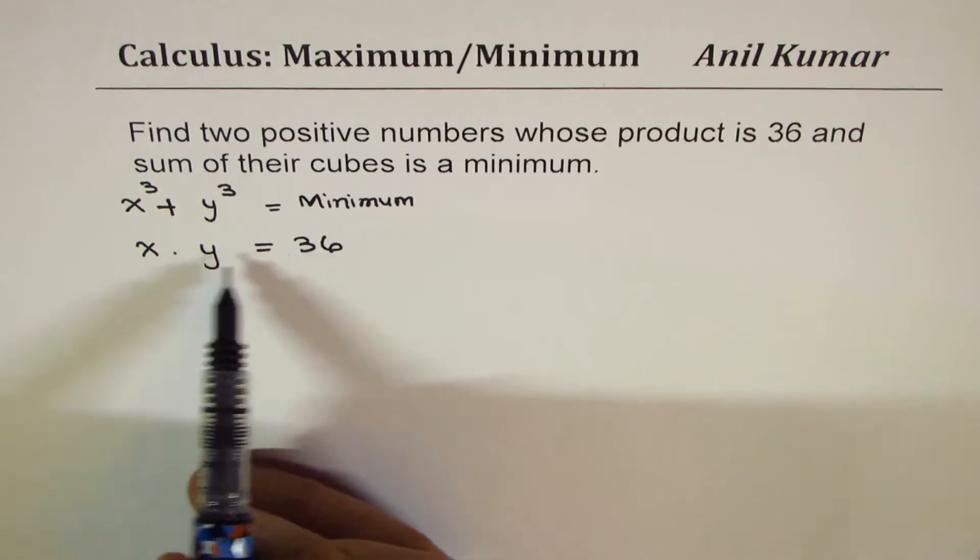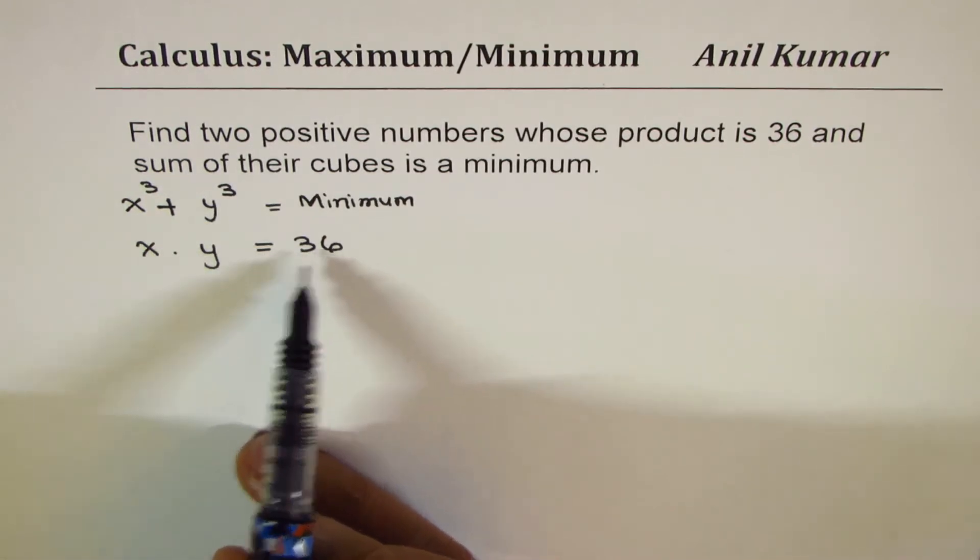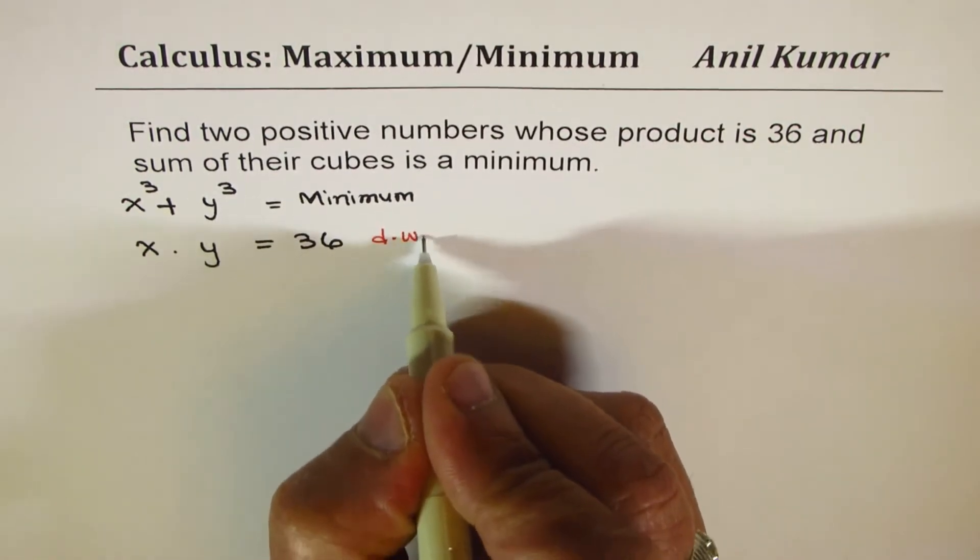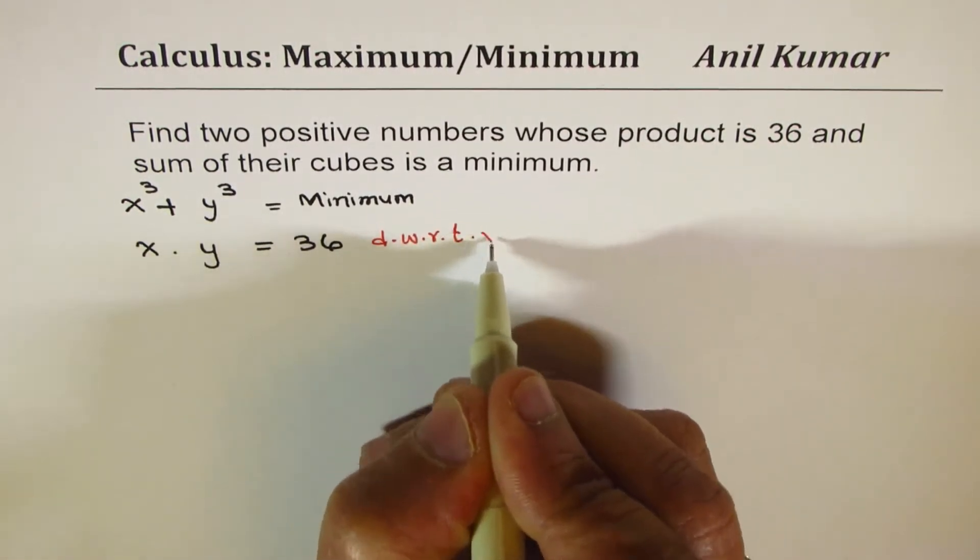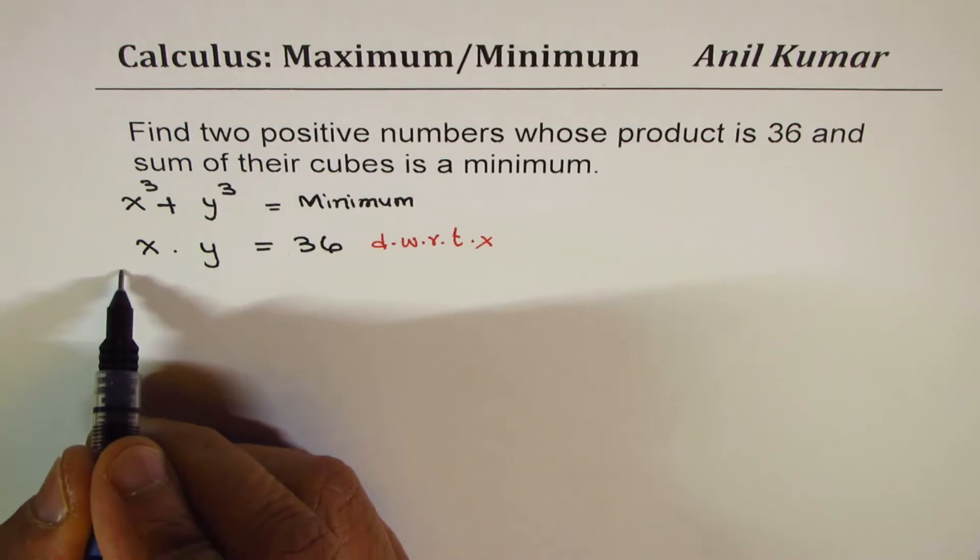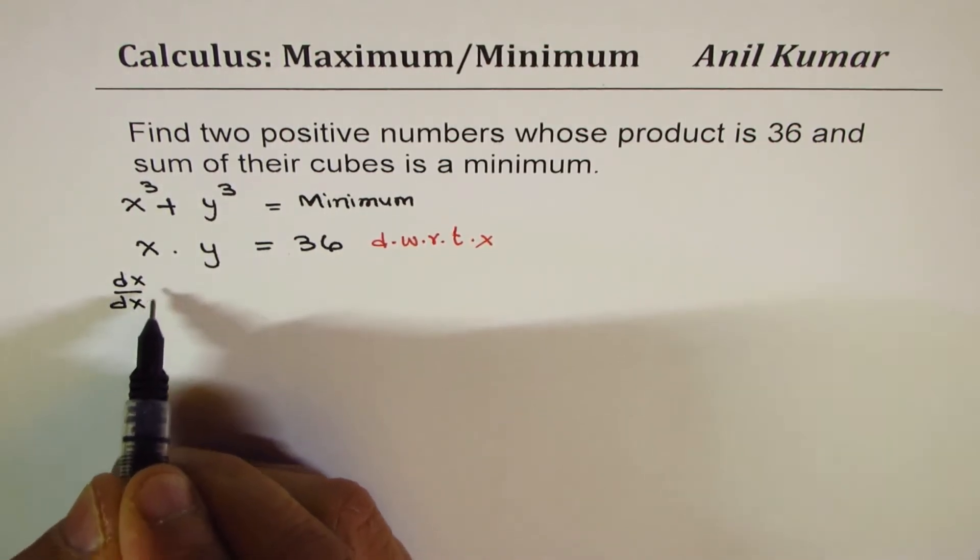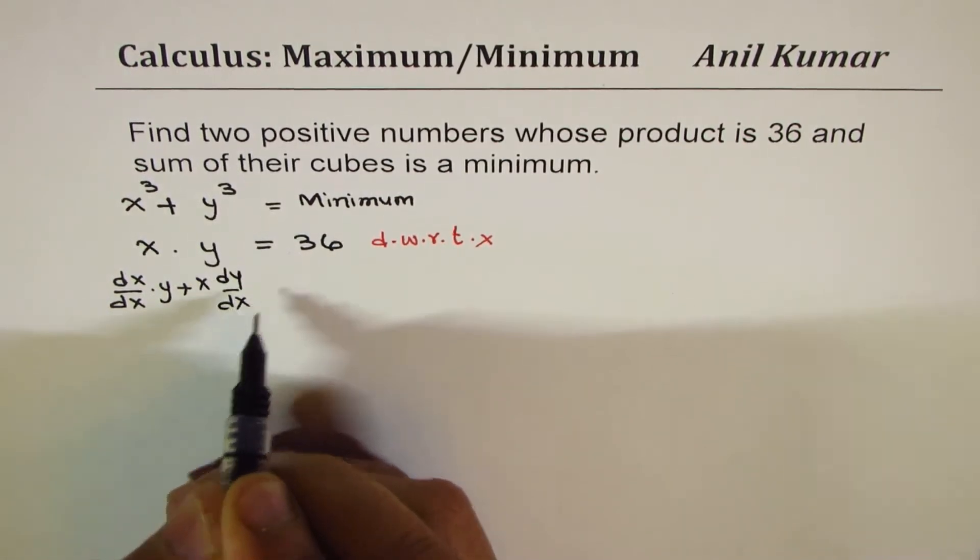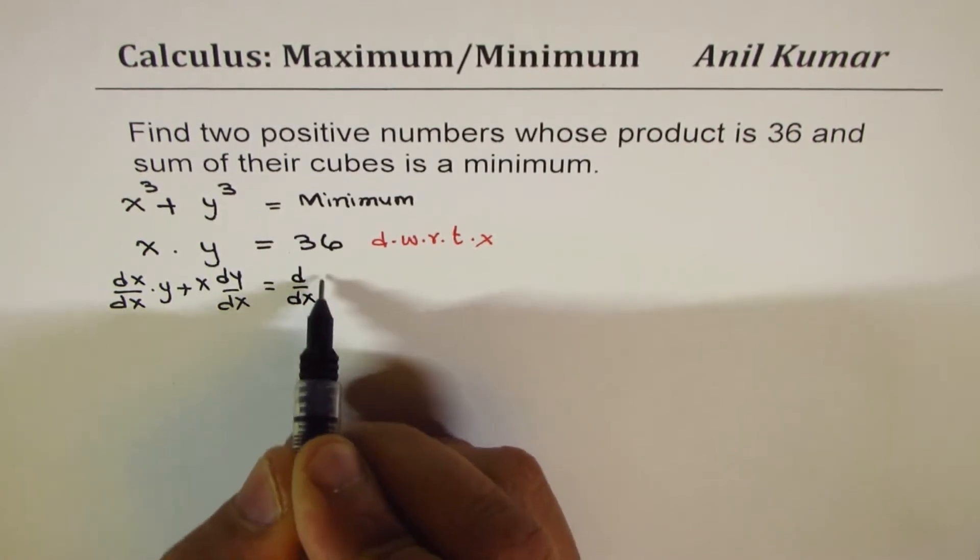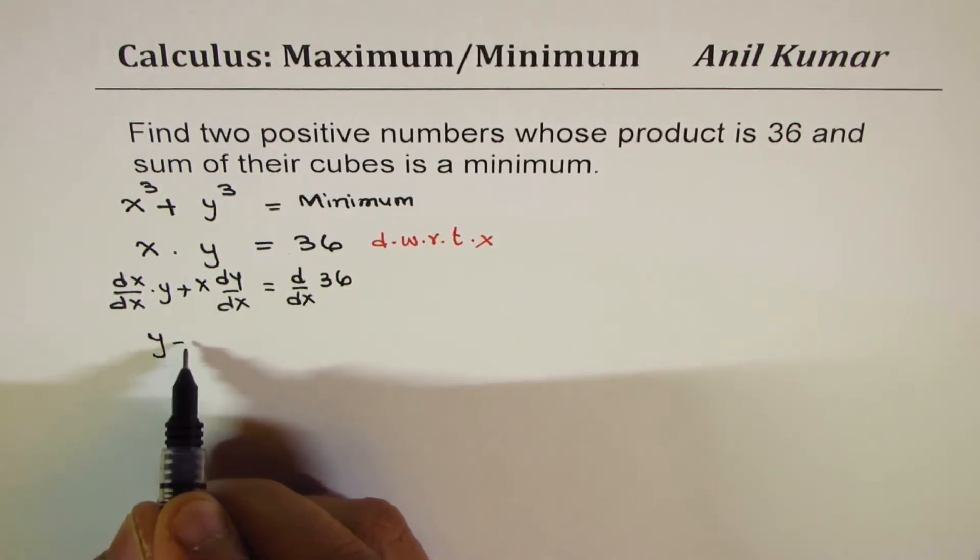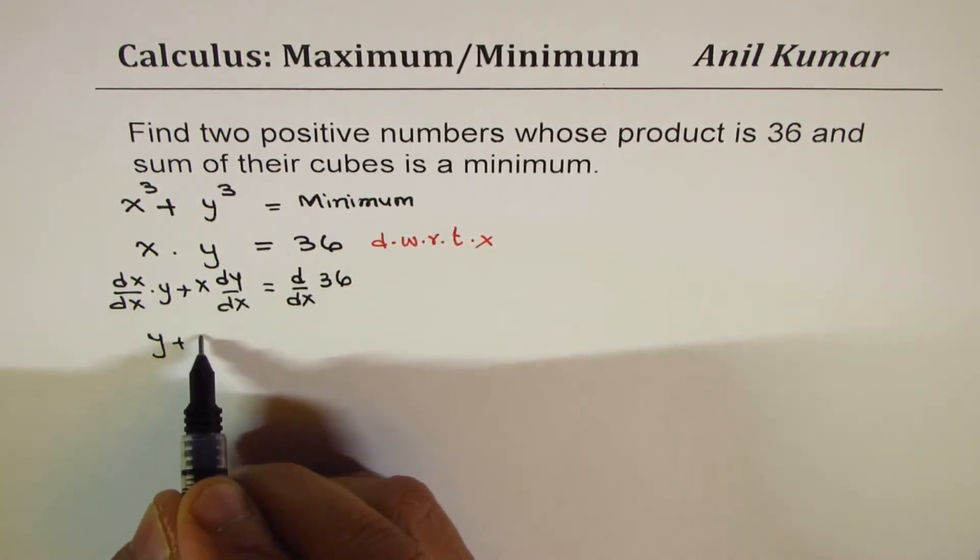We have x times y equals 36, so if I differentiate this equation with respect to x, then what will I get on both sides? We'll apply the product rule, so we have dx/dx times y plus x times dy/dx, which equals d/dx of 36. This is y, so we have y plus x dy/dx.